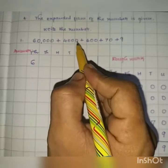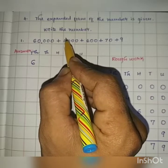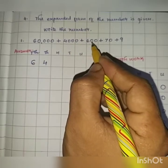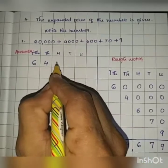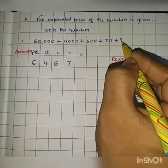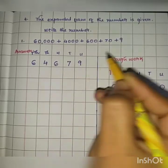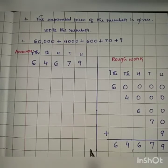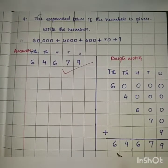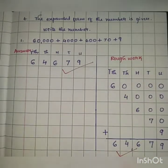Next, four thousand — four is in the thousands place. Then six hundred — six is in the hundreds place. Seven is in the tens place. And nine is in the units place, so nine multiplied by one equals nine. Reading across the place values gives us sixty-four thousand six hundred and seventy-nine. Both methods give the same answer — sixty-four thousand six hundred and seventy-nine.